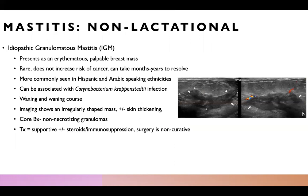Another subtype is idiopathic granulomatous mastitis, which presents as an erythematous palpable breast mass. It's very rare, does not increase cancer risk, but can take months to years to resolve. It's more commonly seen in Hispanic and Arabic-speaking ethnicities and can be associated with Corynebacterium infections. It typically has a waxing and waning course. On imaging, you'll see an irregularly shaped mass with possible skin thickening. On core needle biopsy, you'll see non-necrotizing granulomas. Treatment is supportive, but steroids and immunosuppression may be required if severe. Surgery is non-curative.